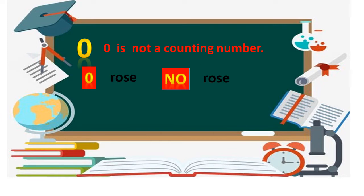We can say zero is not a counting number. For example, if there are no rows, we can say that we have zero rows. So zero is not a counting number as we cannot count things using the number zero.